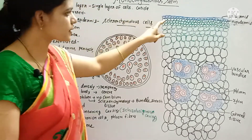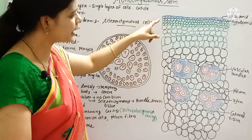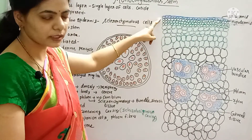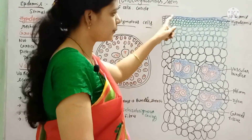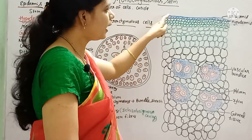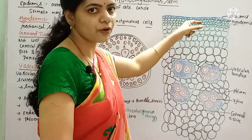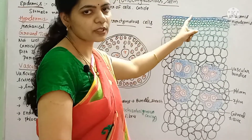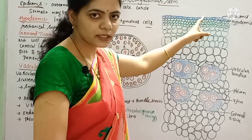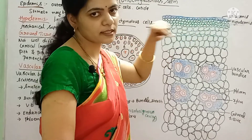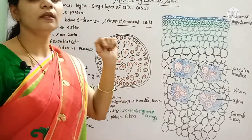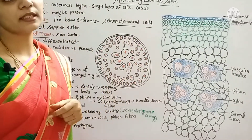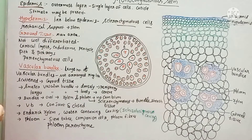What is the outermost layer? Epidermis. It is a single layered epidermis, and the epidermis has a cuticle — a waxy layer. What is the function of the cuticle? It protects the plant from water loss.